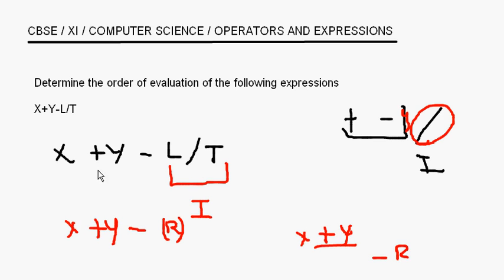So this is the order of evaluation: first the division is done, then the plus is done, and then lastly the minus is done.